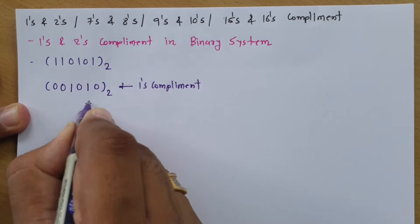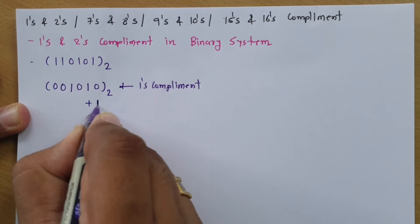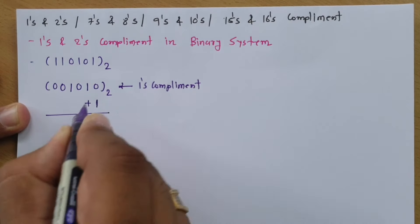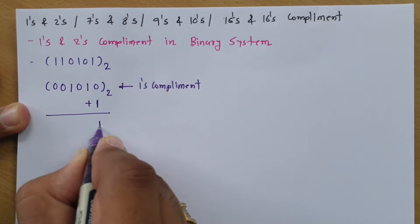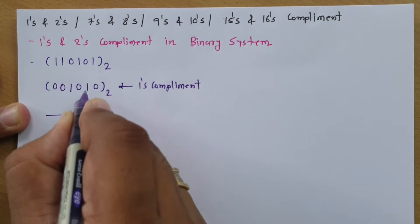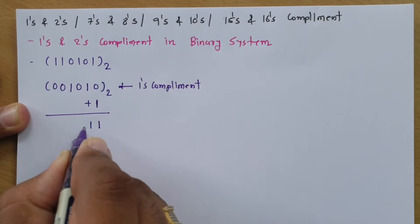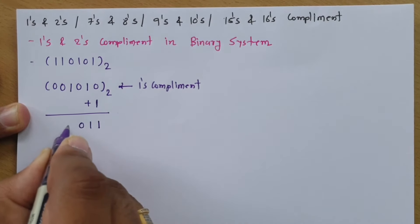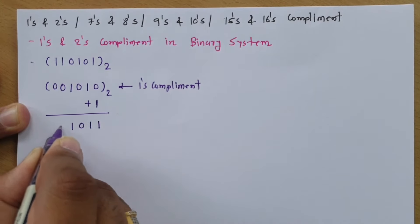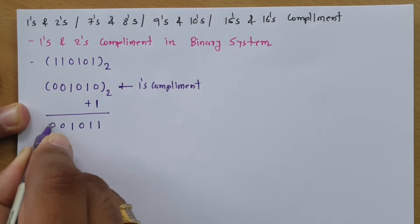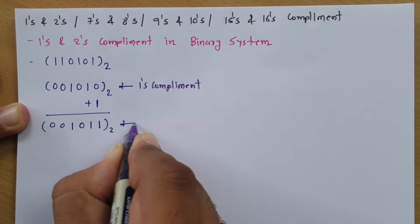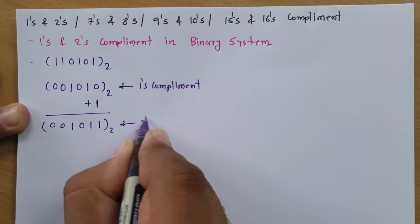If I add 1 to the 1's complement, then 0 plus 1 is 1, and this gives us the 2's complement.